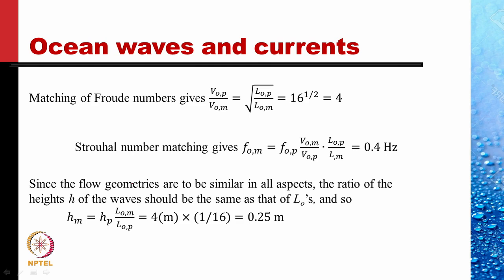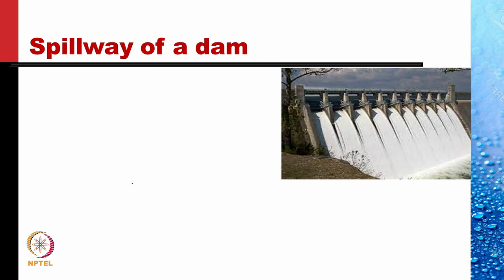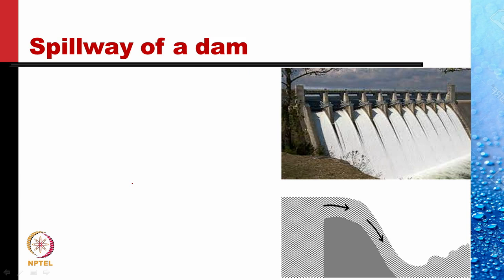Let us do one more example: modeling the spillway of a dam. Water stored in dams needs to be drained, and at great height it acquires large velocity. If water falls freely it will damage the ground below, so the spillway must be carefully designed. Typically, the water accelerates down the spillway and this portion is designed so that there is a hydraulic jump in which the fluid slows down and the water level rises in the channel.